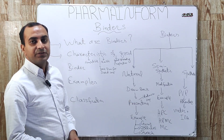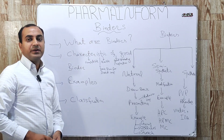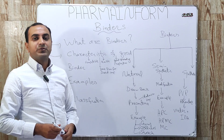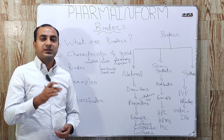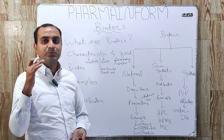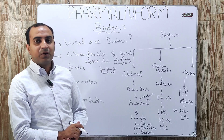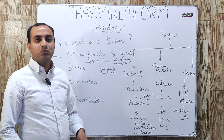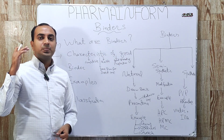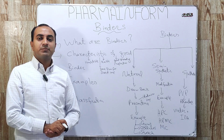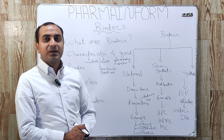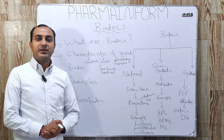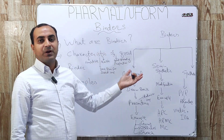Binders are basically one of the most important pharmaceutical excipients, which are used in the manufacturing of tablets, capsules, pills, or dry powder suspensions. The function of binders is to give cohesiveness or binding properties to the powders to convert them into granules. In the case of direct compression, we also use binders, which are known as dry binders.